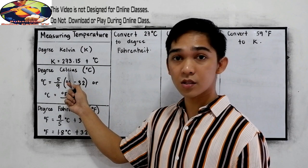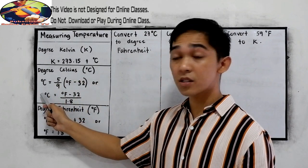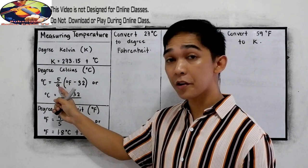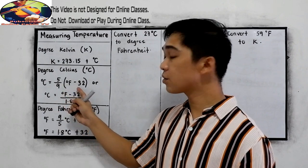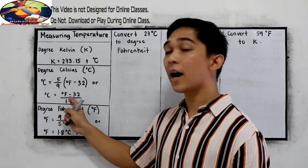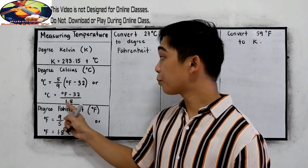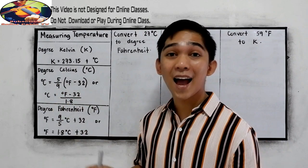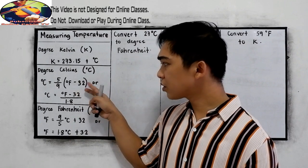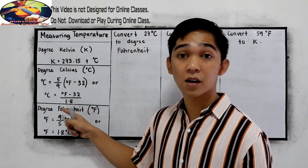And for degree Celsius, represented by the letter C: degree Celsius is equal to 5 over 9, multiplied by the quantity of the given degree Fahrenheit minus 32, or equivalently, degree Fahrenheit minus 32 all over 1.8. That is the equivalent of 9 over 5, that's why we have 1.8. You can use either the fraction 5 over 9 or the decimal 1.8.